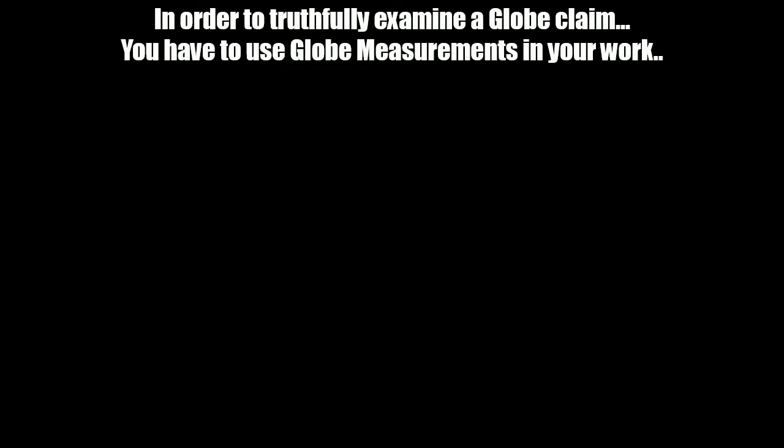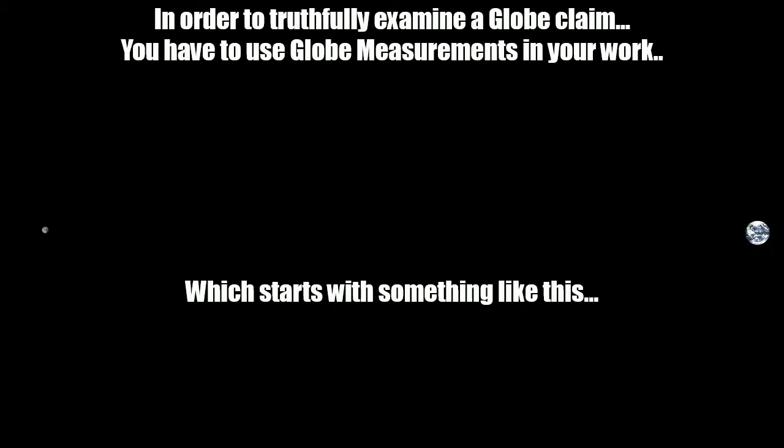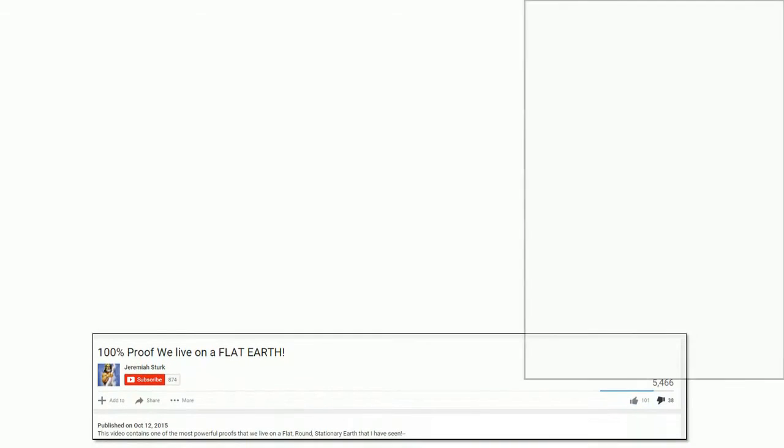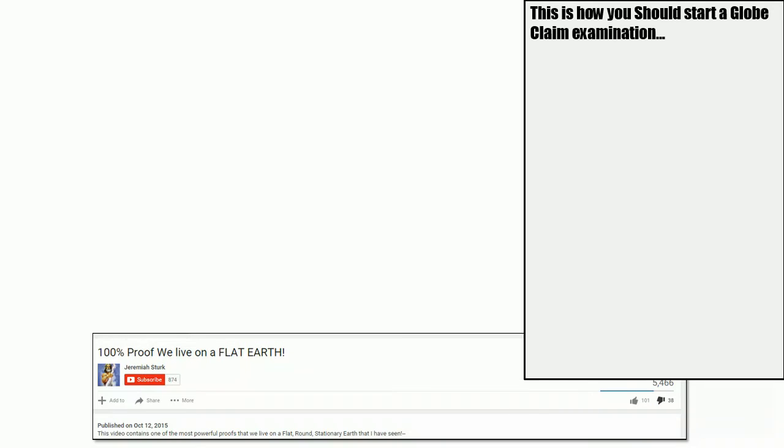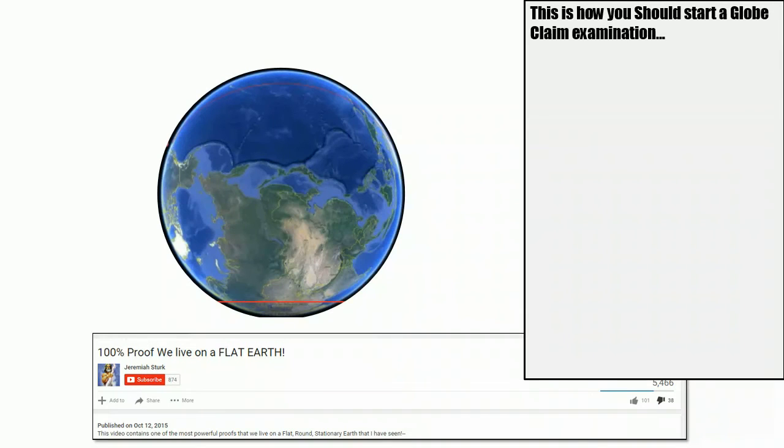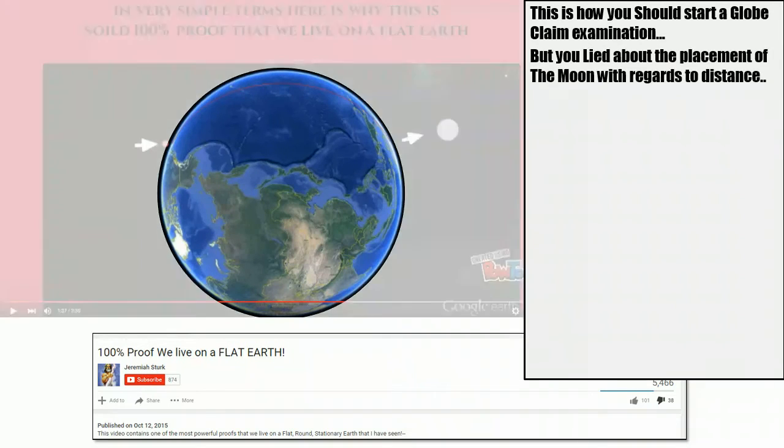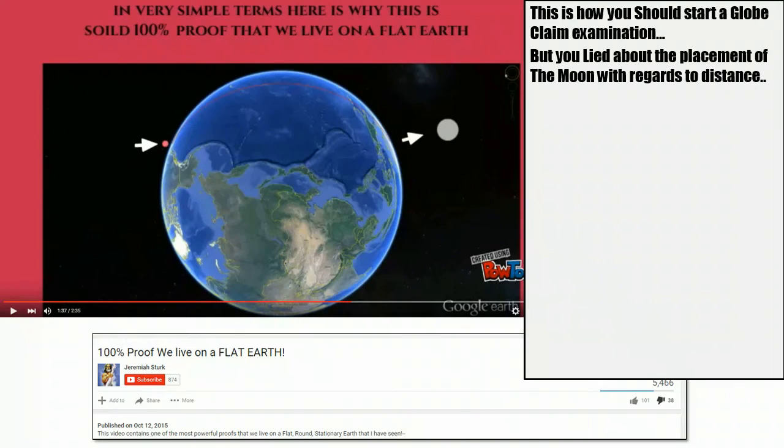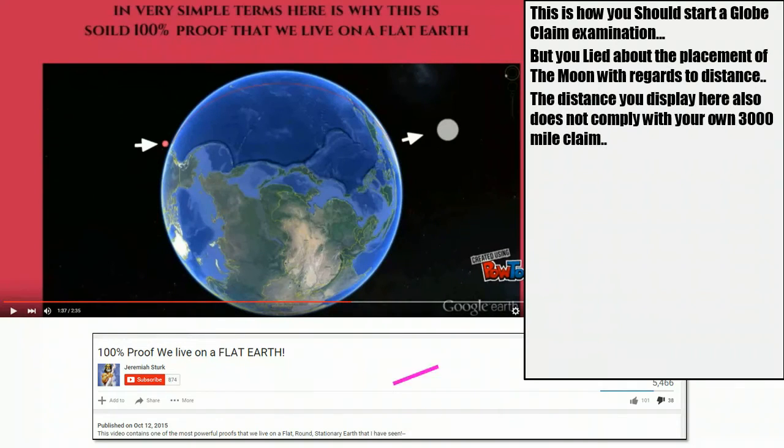If you really want to do an examination of anything about the globe and the moon, you have to use the globe measurements to do your work, which looks a little bit like this. But then it doesn't stop there. This is how you should start a globe claim examination. But then you lied about the placement of the moon in regards to the distance. The distance you display here also doesn't comply with your 3,000 mile claim. The distance you display here is only about 1,400 miles.